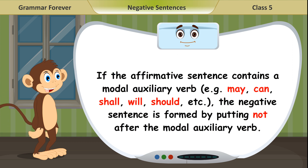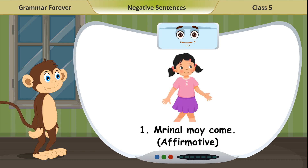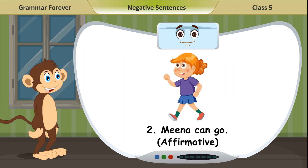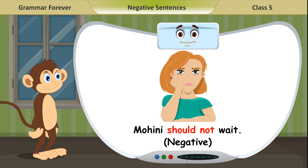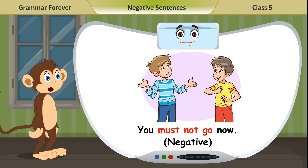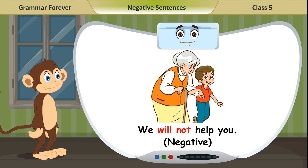If the affirmative sentence contains a modal auxiliary verb — may, can, shall, will, should, etc. — the negative sentence is formed by putting 'not' after the modal auxiliary verb. Examples: 1. Brinal may come (affirmative). Brinal may not come (negative). 2. Meena can go (affirmative). Meena cannot go (negative). 3. Mohini should wait (affirmative). Mohini should not wait (negative). 4. You must go now (affirmative). You must not go now (negative). 5. We will help you (affirmative). We will not help you (negative).